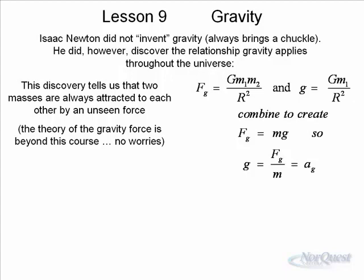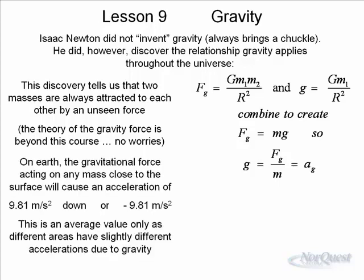We can talk about the effects of gravity without really understanding the complete source of what causes gravity. But on Earth, the gravitational force acting on any mass close to the surface, where you and I are sitting right now, will cause an acceleration of approximately 9.81 meters per second squared down.